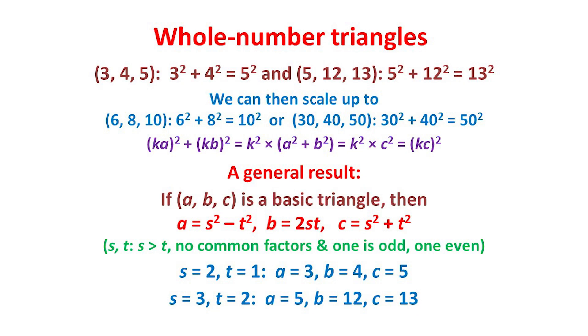Earlier, we saw two right-angled triangles, the lengths of whose sides were whole numbers. These were the triangles with sides 3, 4 and 5, where 3² + 4² = 5², and the triangle with sides 5, 12 and 13, where 5² + 12² = 13².